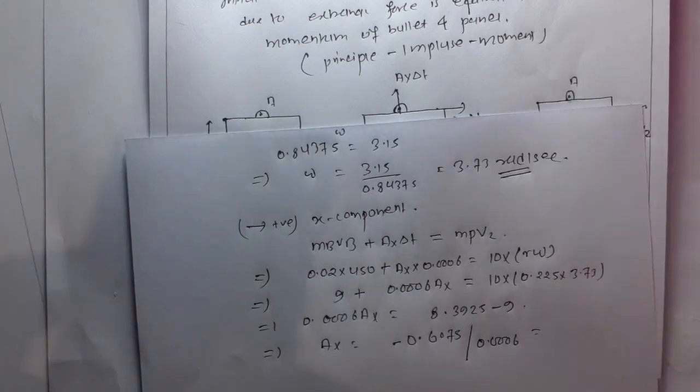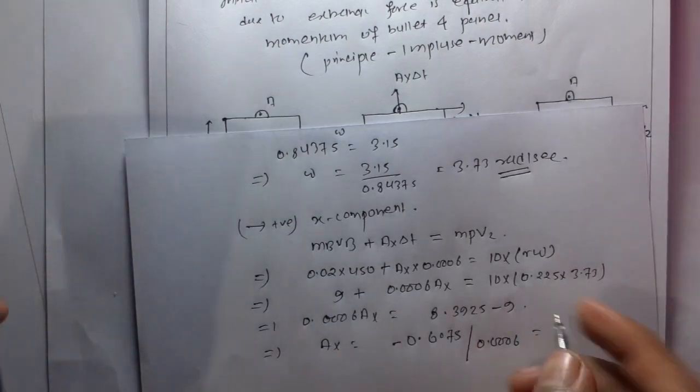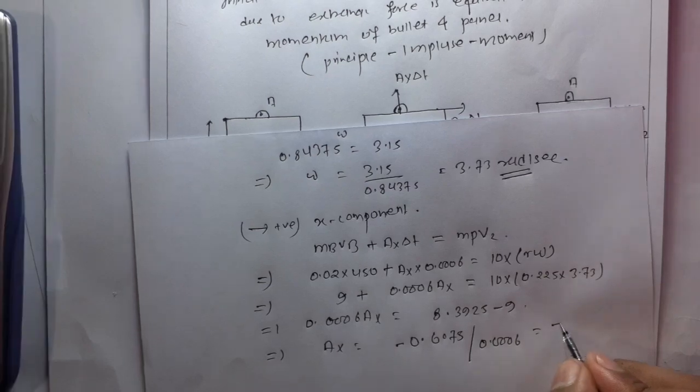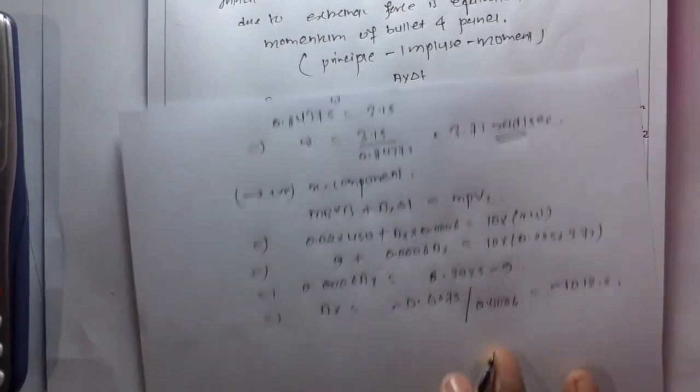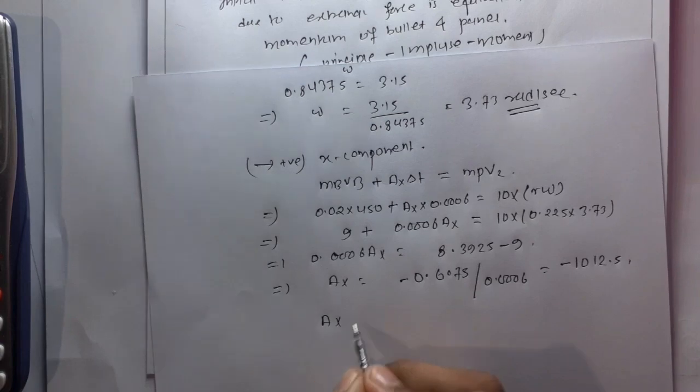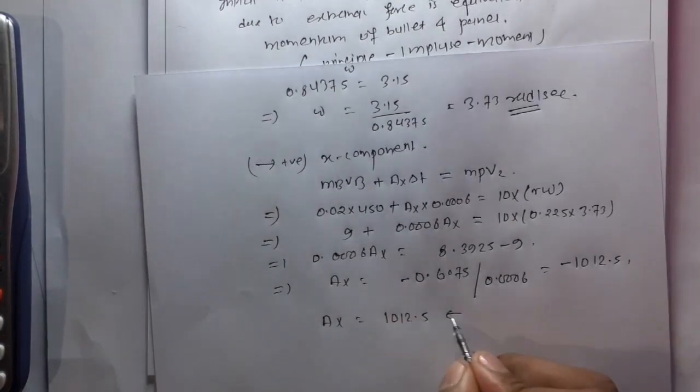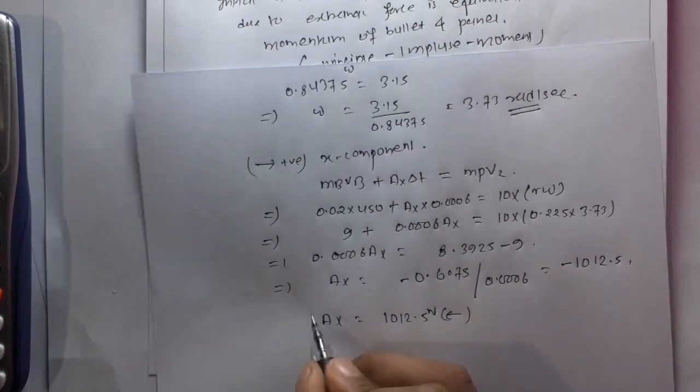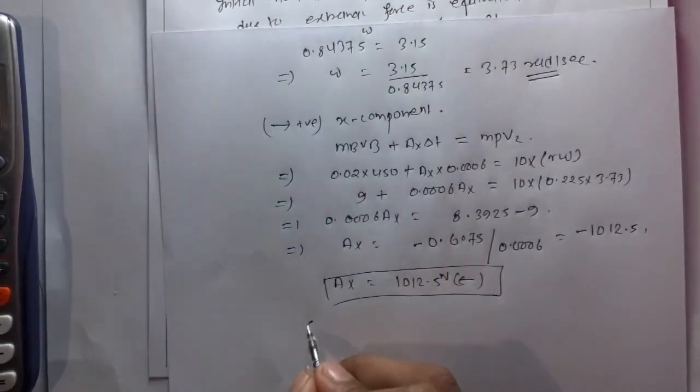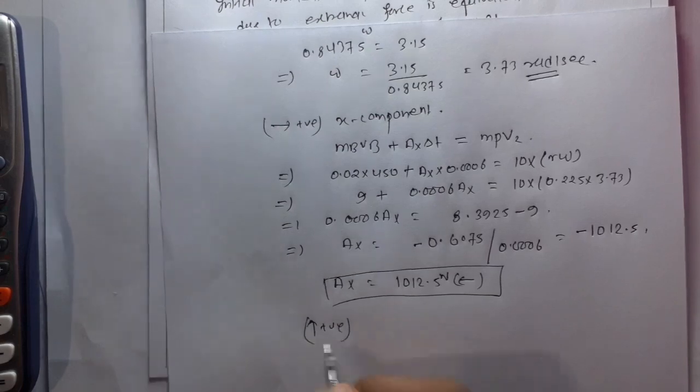0.006 Ax is equal to 0.225 times 3.73 minus 9, so 0.006 Ax equals negative 8.161, which gives Ax equals negative 1012.5 Newtons in this direction.